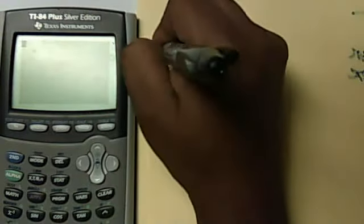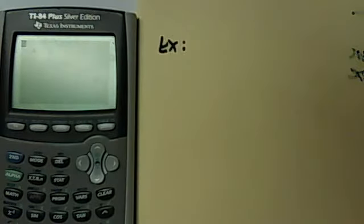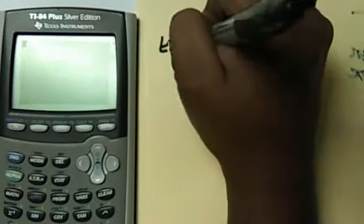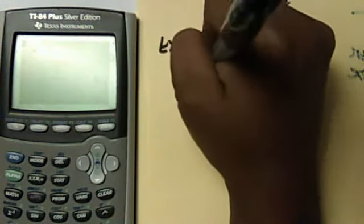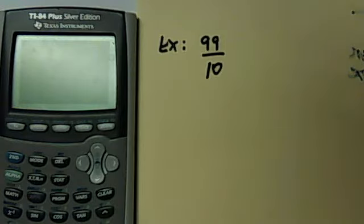Alright, so let's say for example I have 99 over 10 and I want to change that into a mixed number, which is a whole number and a fraction.